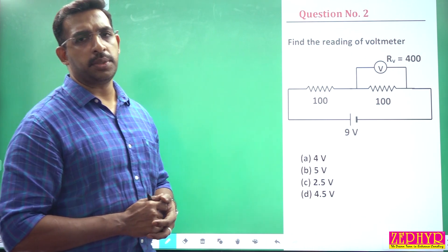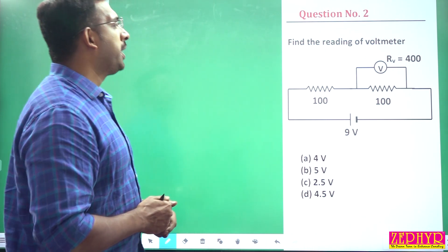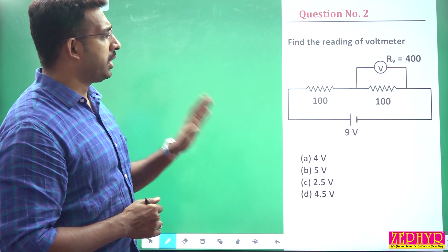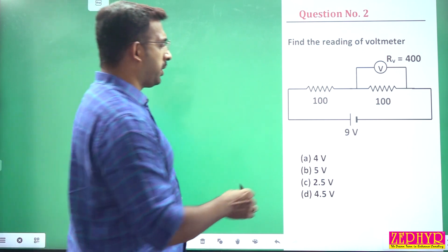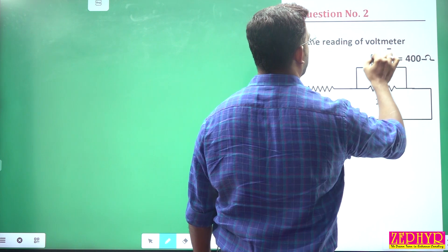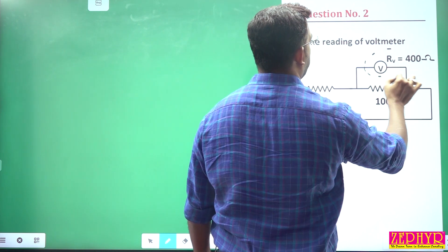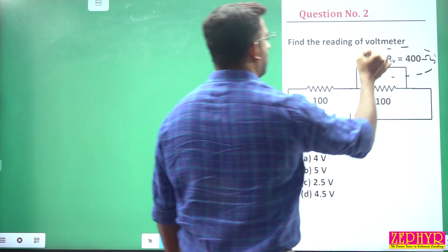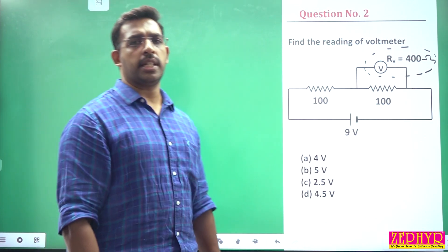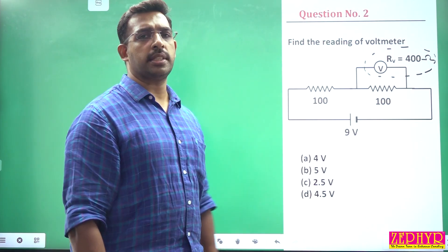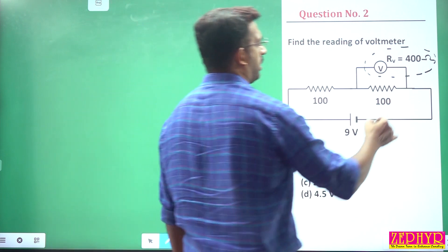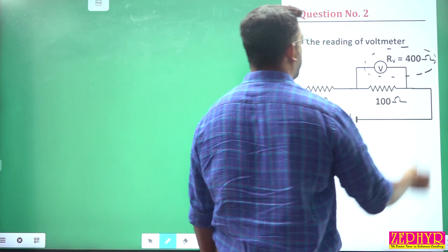Next, I'm going to talk about current electricity — specifically the reading of a voltmeter. We will talk about the resistance of the voltmeter and how it affects the reading.